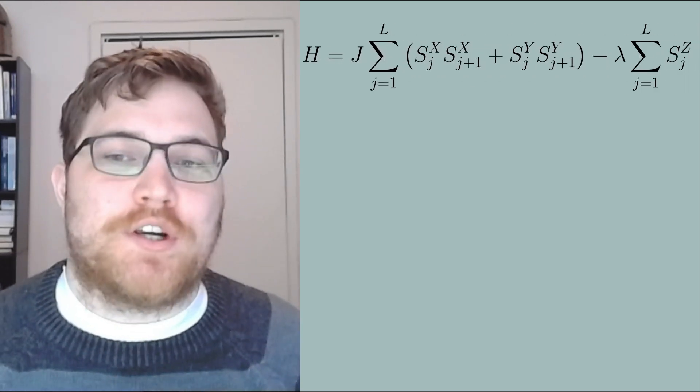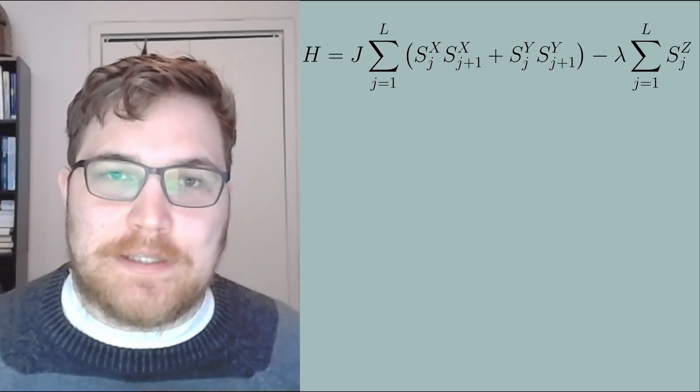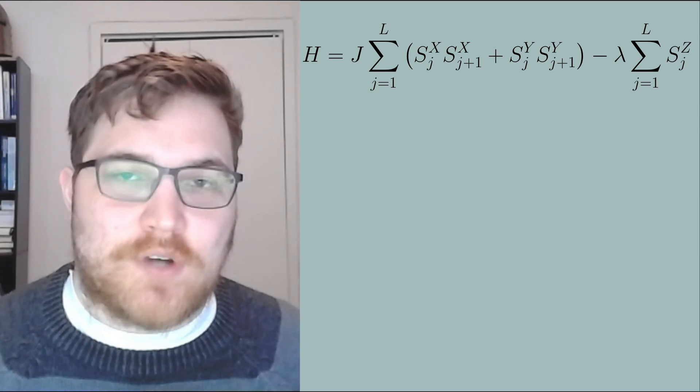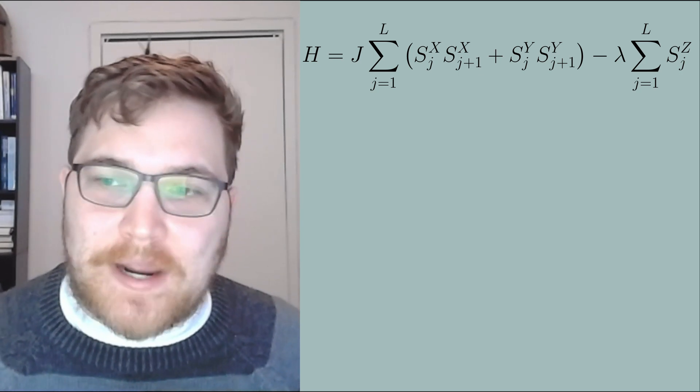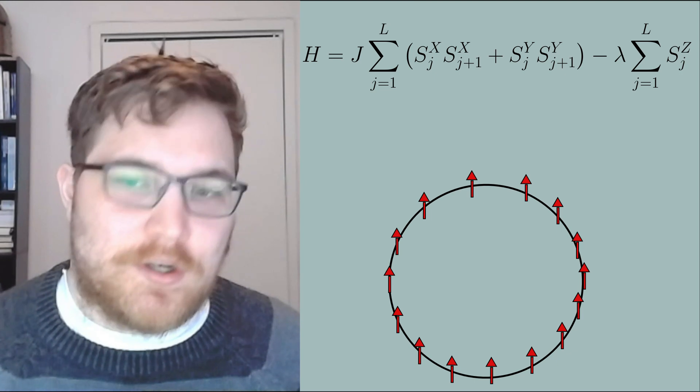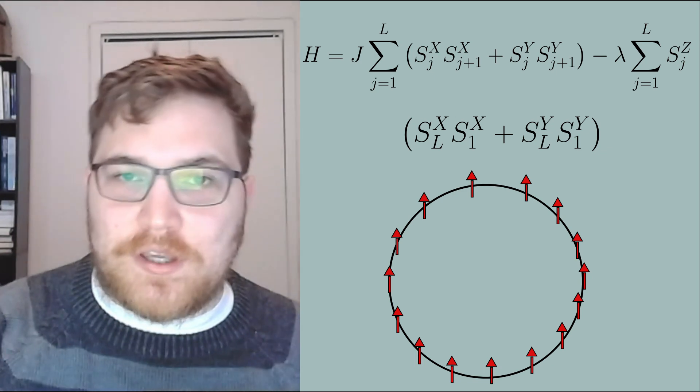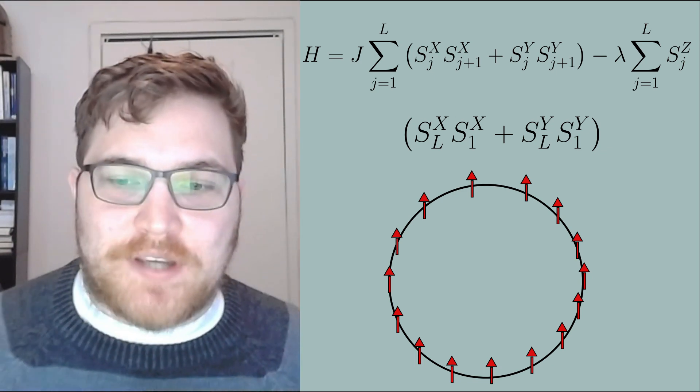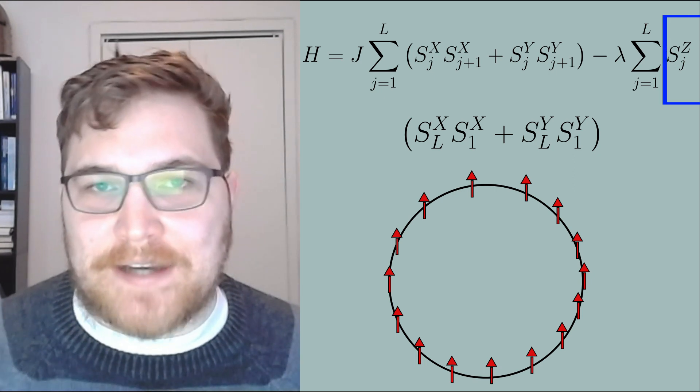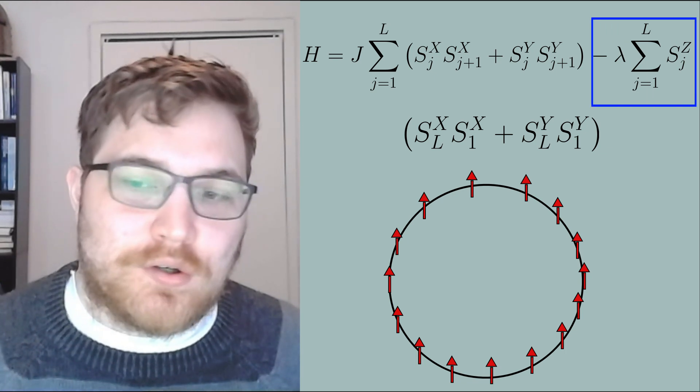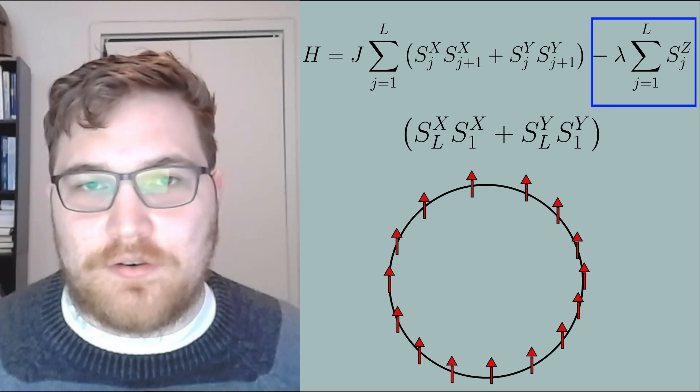The model we're going to solve is a toy model for magnetism and is written in the following way. The terms here are the usual spin one-half operators in the x, y, and z directions. The Hamiltonian describes spins on a one-dimensional chain interacting and the chain will have periodic boundary conditions. This means that we'll have terms that connect the Lth spin to the first spin.